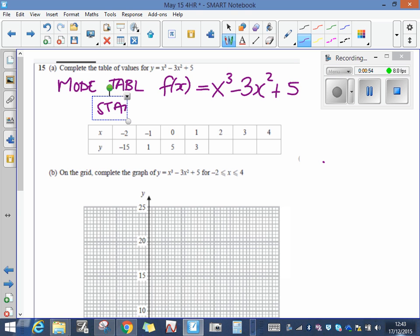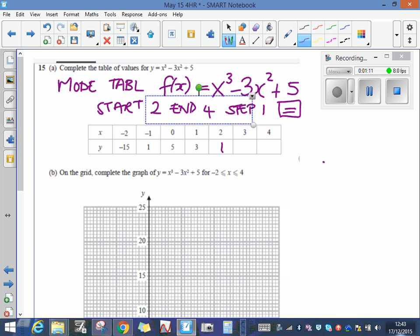It'll then ask you where you'd like to start. We're not really interested in minus 2 or minus 1, so you start at 2, you end at 4, and it says step, so you're going to go up in steps of 1. Then you just press equals on your calculator and you will get 1, 5, and 21.